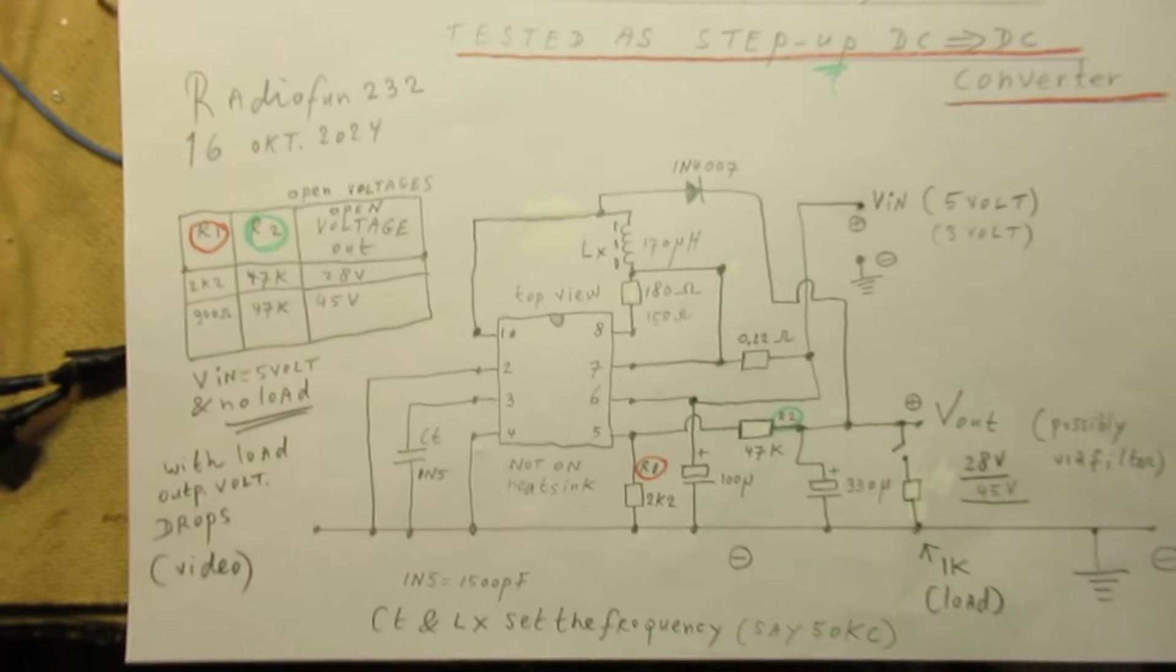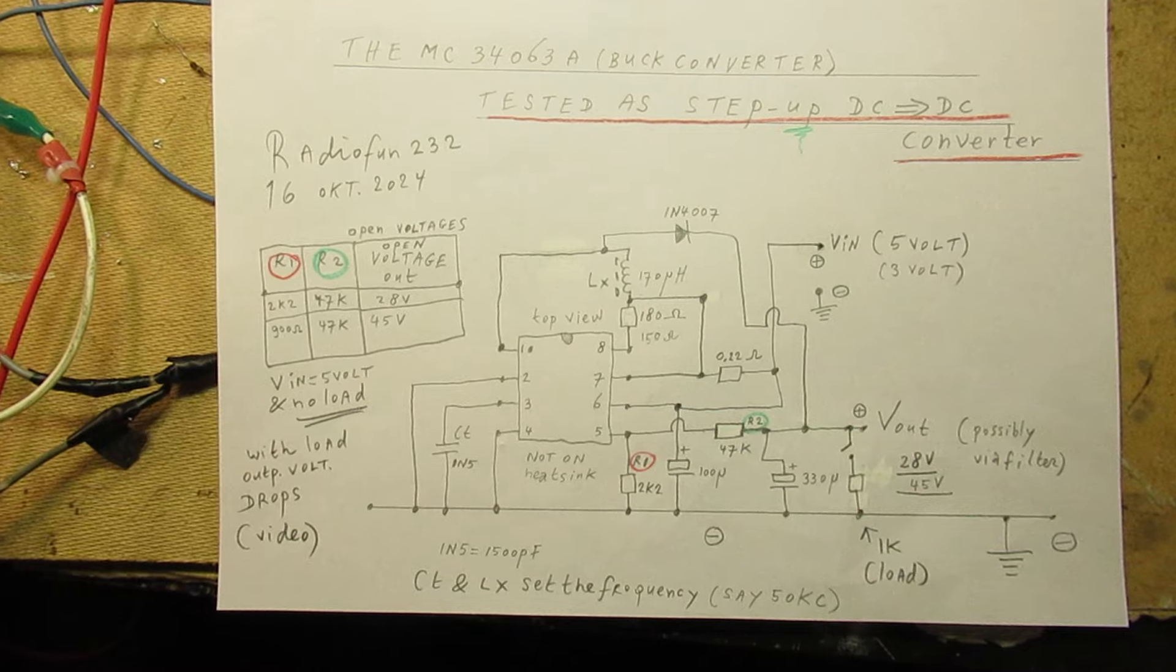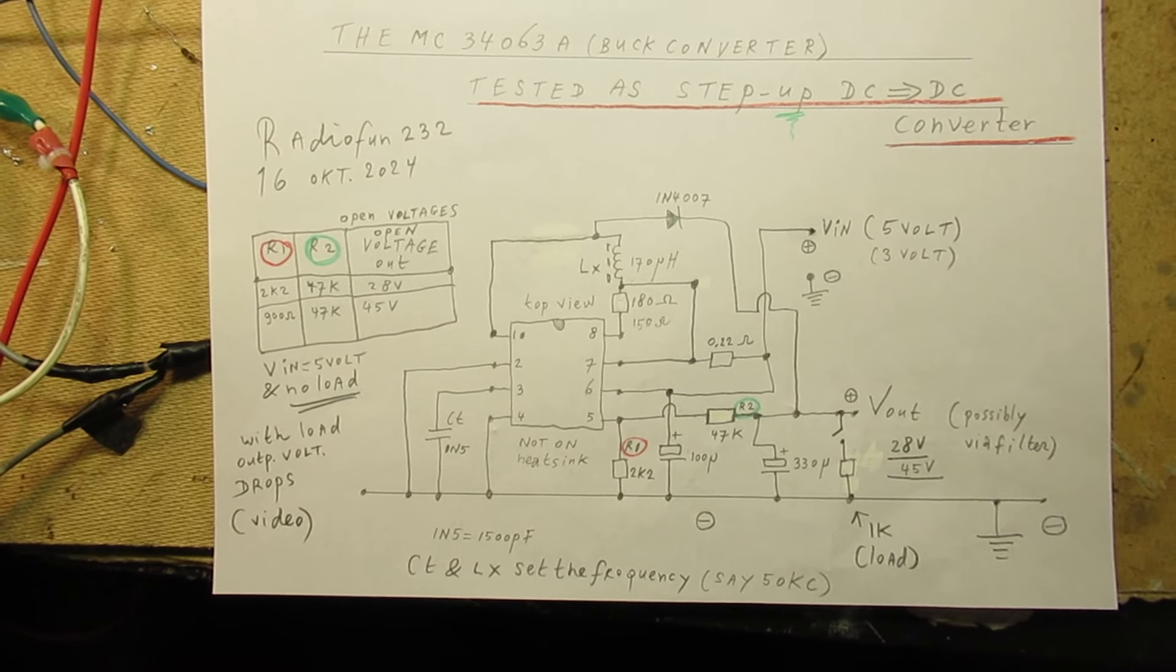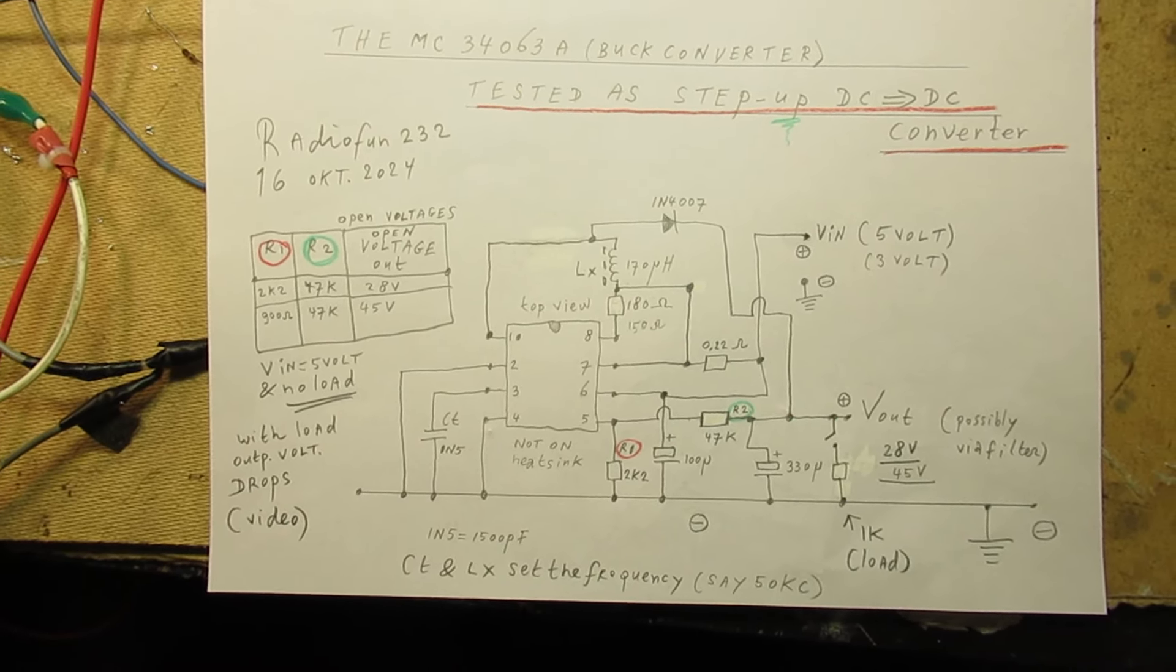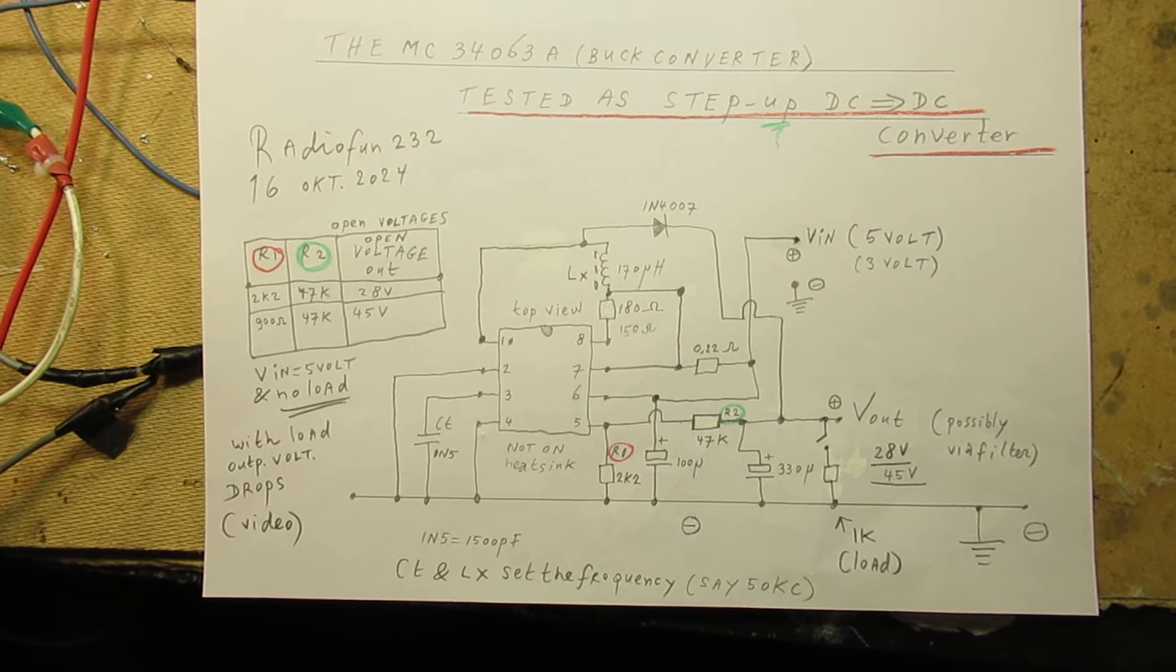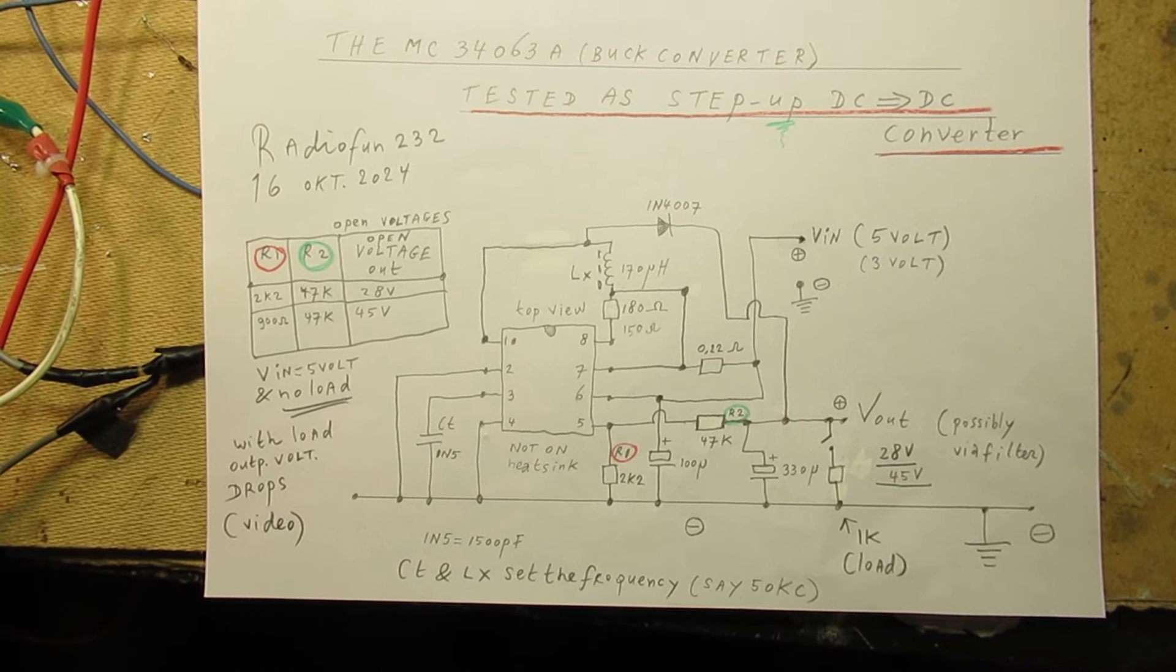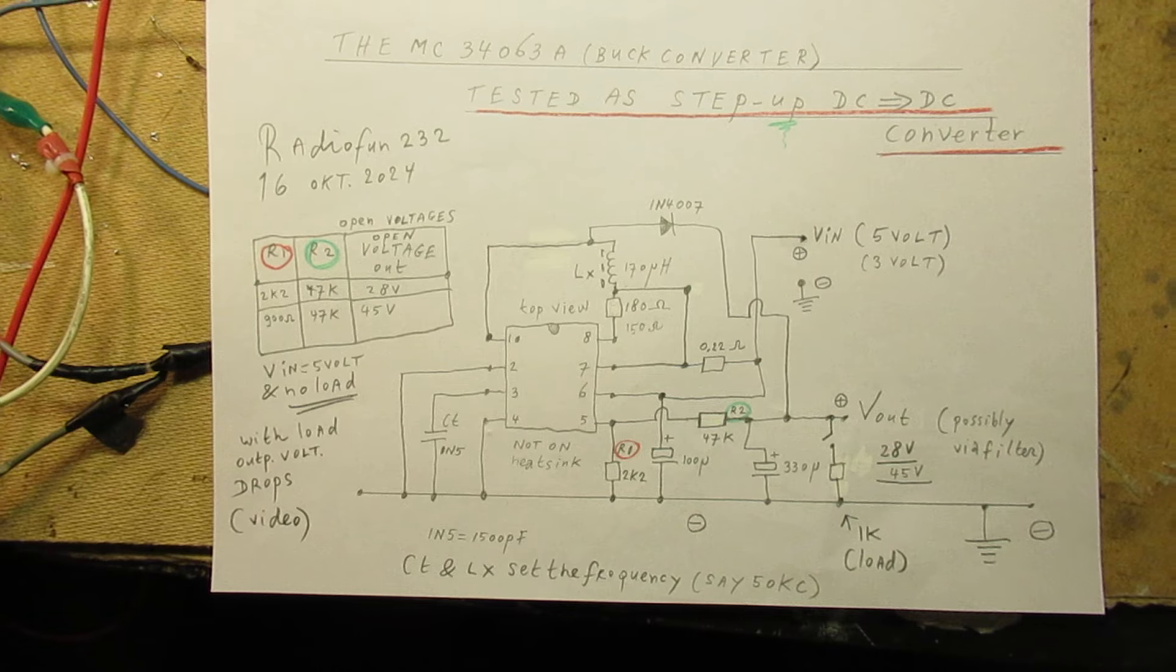This is the schematic with some ins and outs. Of course I found that when you connect a load to the step up converter, the voltage will drop down. That's quite logical.